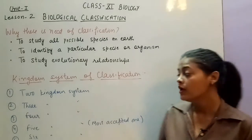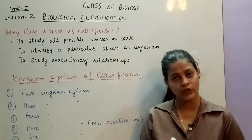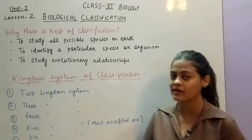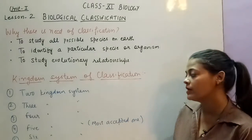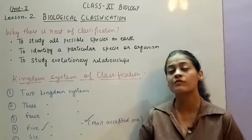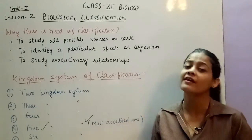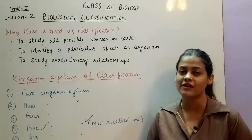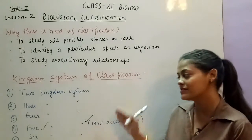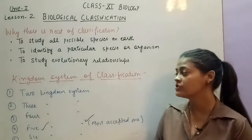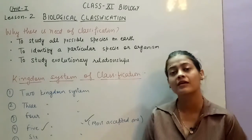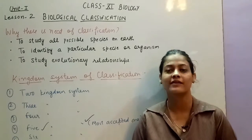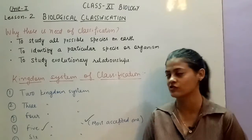We have five main kingdom systems: the two kingdom system, three kingdom system, four, five, and there was also a six kingdom system of classification. But in this, the most accepted concept is the five kingdom system of classification, which you may have studied in ninth class. We will discuss in detail, one by one, how and which scientist gave the different kingdoms of classification, and why the five kingdom system was the most accepted.